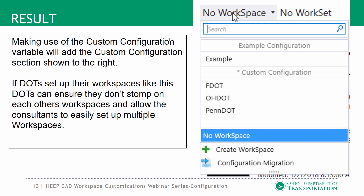When we open MicroStation, using the workspace pull-down you'll see 'example configuration' and 'custom configuration,' separated by a divider. One thing to note: if you select an example configuration it loads the organization from that location; if you select from the custom configuration it loads the organization from the custom location. That's the only way to switch between organizations — it's not workspace-specific by design. Hopefully other DOTs follow this setup, making it easy to switch between standards.